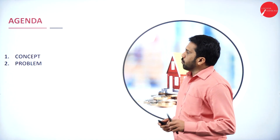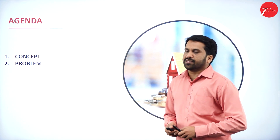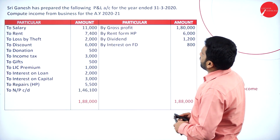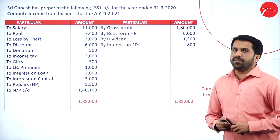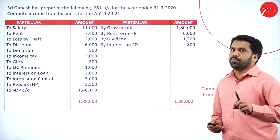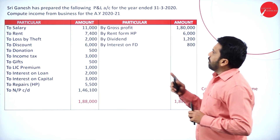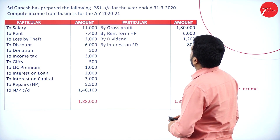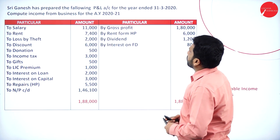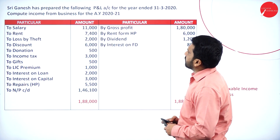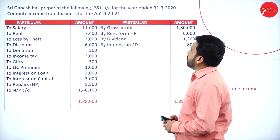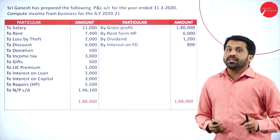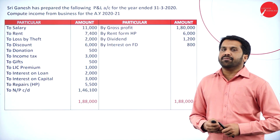Today's session will cover one problem along with concept. Sri Ganesh has prepared the following P&L for the year ending 31st March 2020. Compute income from business for the assessment year 2020-21.